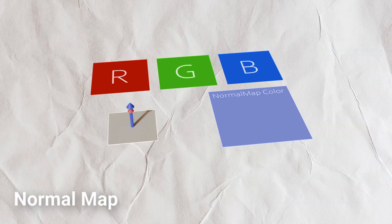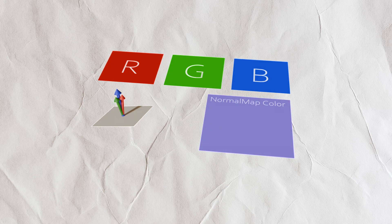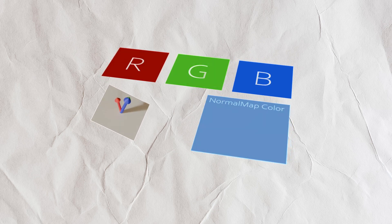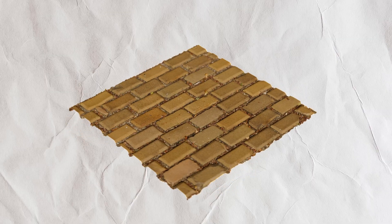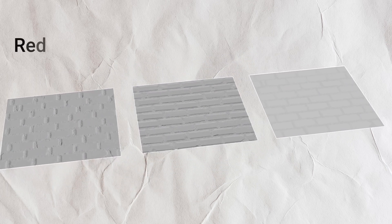Now let's look at the normal map. Normal maps don't represent height, but rather the direction of the surface, and this method is extremely efficient in terms of performance. A normal map consists of three primary colors: red, green, and blue. Red indicates the direction of the surface left and right, green indicates forward and backward, and blue shows the overall intensity of the directional changes.